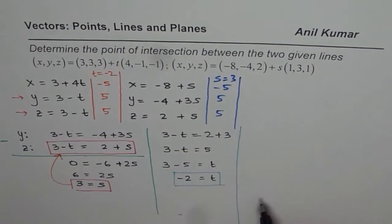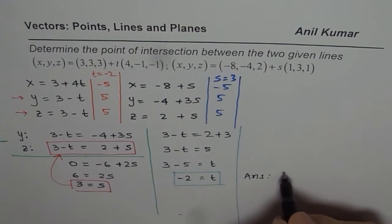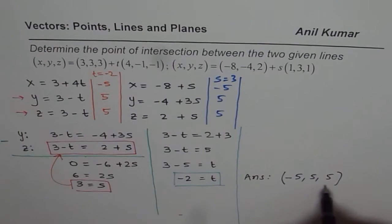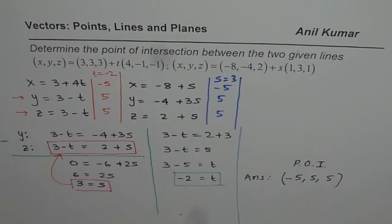So we did get the same point of intersection. And we say that our answer is that the point of intersection for us is minus 5, 5, 5. So that is the point of intersection. That is how you should be solving these types of questions.